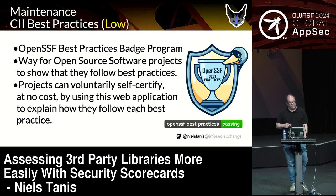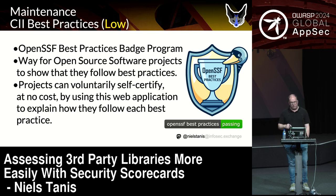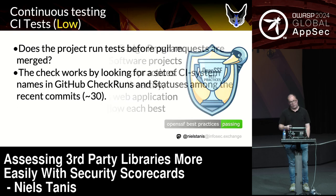The other thing they look into is best practices in relation to CII. All the other checks are automated, but this one is an attestation that each project can do themselves by filling out a form, then a person reviews everything. Keep in mind that I've mentioned a lot of GitHub, but scorecards work on both GitHub and GitLab repositories. You earn a badge and this helps the score.